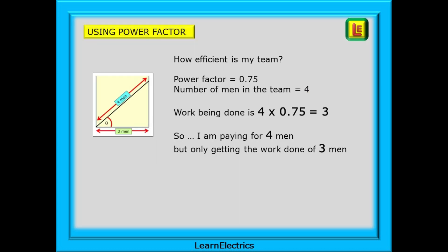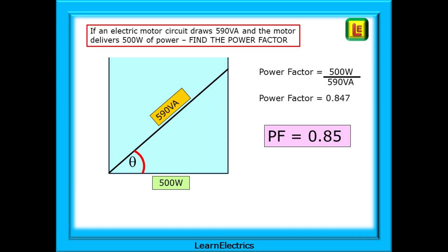The apparent power is four workers, but the actual power is only three workers, and cos theta tells us the power factor — 75% efficient. Back at the office, the boss knows the power factor is 0.75 and there are four men, so actual work done equals four multiplied by 0.75, which is three. For an electrical example: if an electric motor circuit draws 590 VA from the source and the motor delivers 500 watts, find the power factor. Adjacent over hypotenuse: 500 watts divided by 590 VA gives 0.847, which rounds to 0.85 or 85% efficiency.